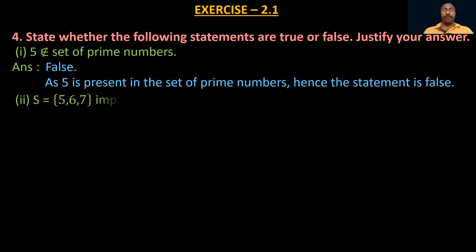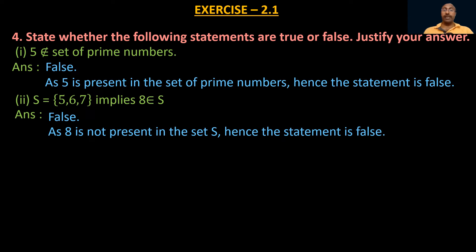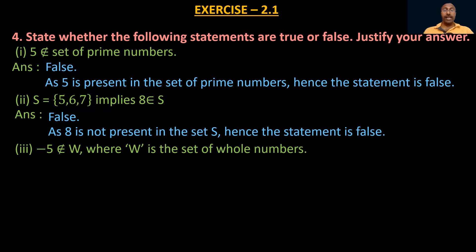Second: 'S = {5, 6, 7} implies 8 ∈ S.' Is 8 present in set S? No — there are only three elements, 5, 6, and 7, in set S, and 8 is not present. So the given statement is false. Third: 'minus 5 does not belong to W, where W is the set of whole numbers.' Whole numbers start from zero and contain no negative integers, so −5 is indeed not in W. Hence the statement is true.